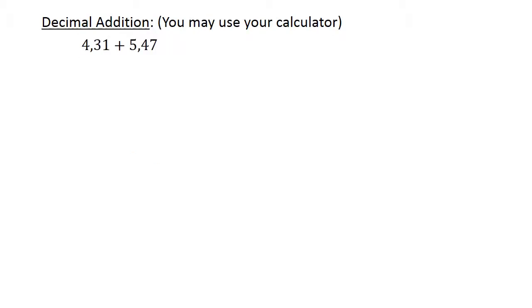Decimal addition. You may use your calculator so you can check all your answers. 4.31 plus 5.47 equals 9.78. Decimal subtraction.